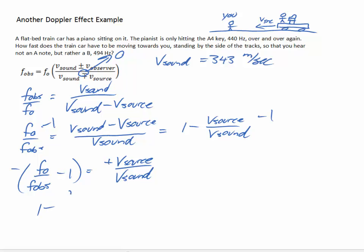And we get 37 and a half meters per second is how fast the train car has to be coming towards you so that you hear a B note instead of the A note that is being played.